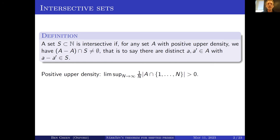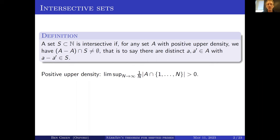Positive upper density means that for arbitrarily large initial segments of the integers, one up to n, the proportion of elements in that segment that are in A is greater than or equal to some delta. Equivalently, the limsup of the number of elements in A up to n divided by n is positive.